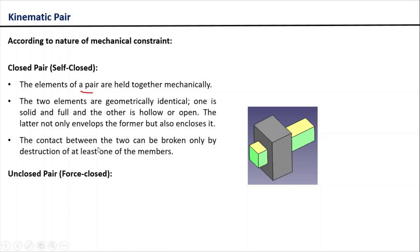Now it is very obvious the contact between the two can only be broken by destroying at least one of the elements. One example of this is if you have a rectangular bar which is moving inside another hollow rectangular bar. In this case, the hollow rectangular bar is enclosing another rectangular bar geometrically, so these two form a closed pair.